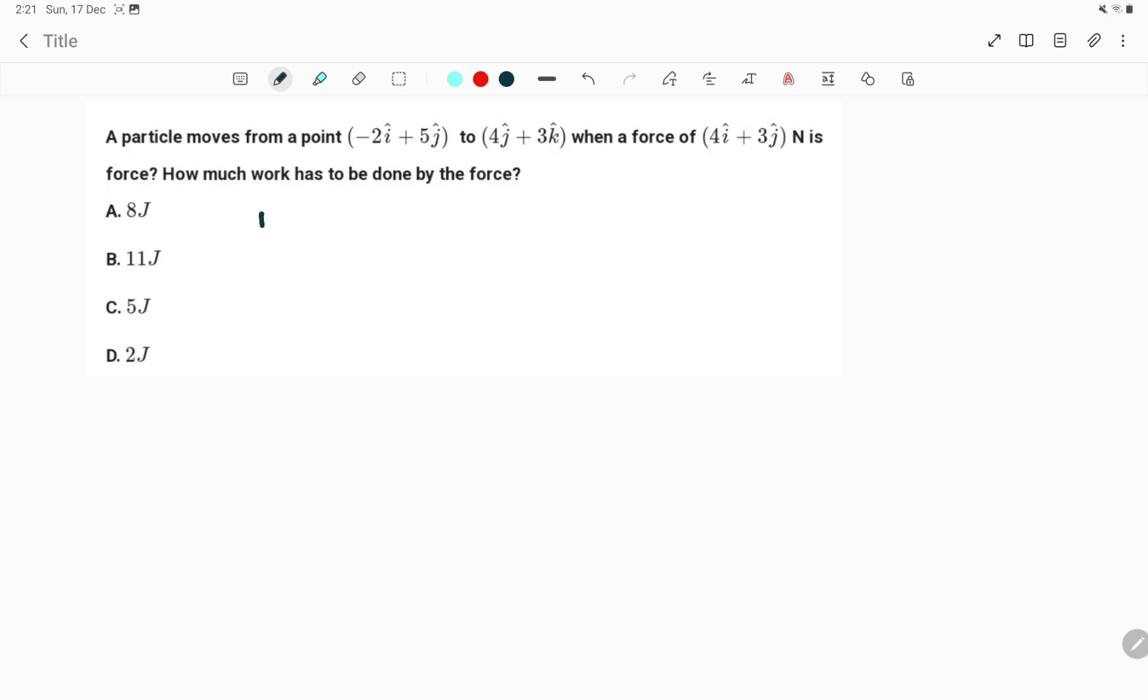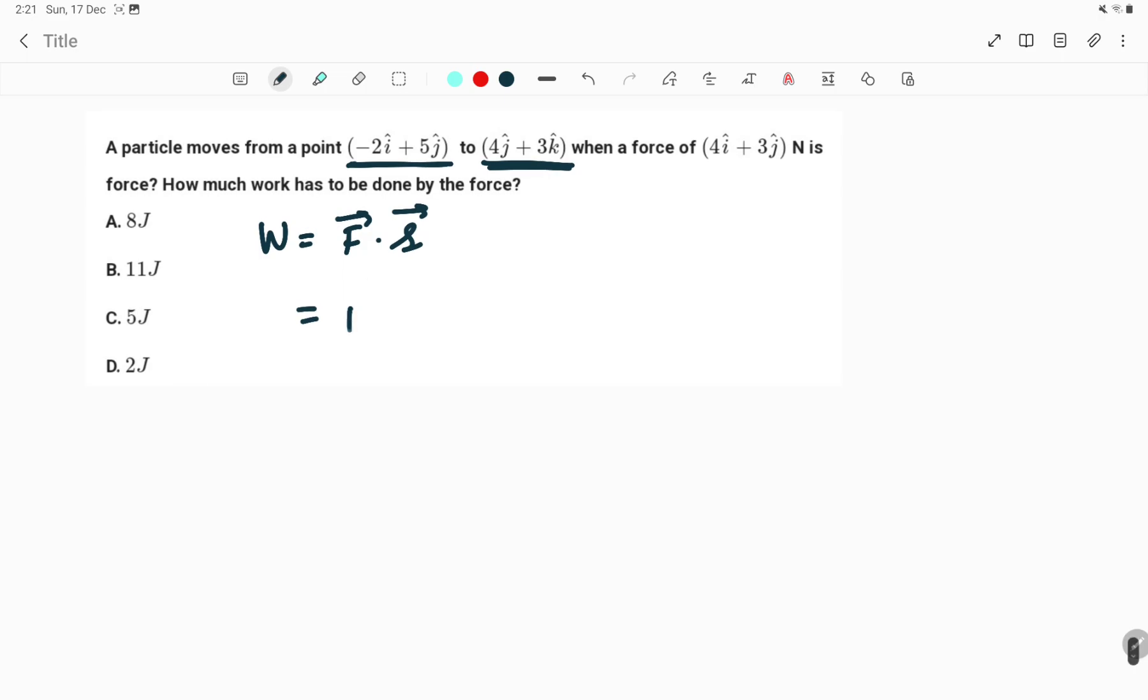For work done, we know the formula: W = F vector dot displacement. But in this case, the displacement is not directly given. They have given the initial position and the final position, so we can easily calculate the displacement.